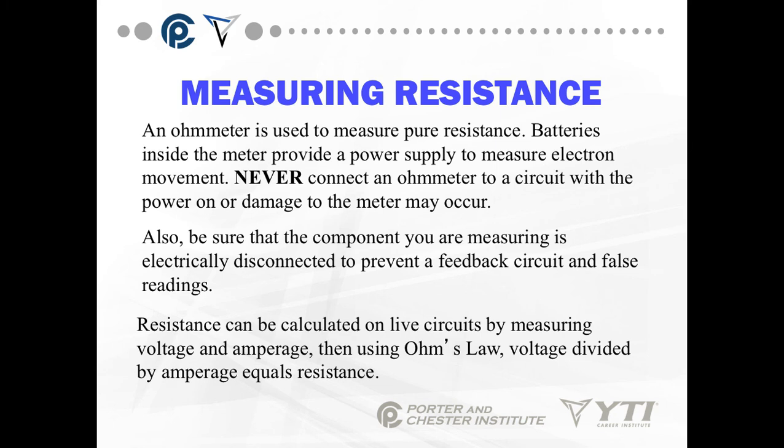If you want to measure the resistance of a light bulb, make sure you take that light bulb out of the circuit, or you could actually measure the remainder of the circuit and get a false reading on that light bulb. Resistance can be calculated on live circuits by measuring voltage and amperage and then using Ohm's Law — voltage divided by amperage equals resistance — but that will be pure resistance.